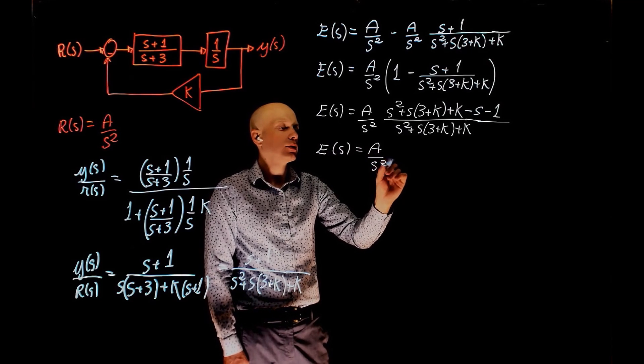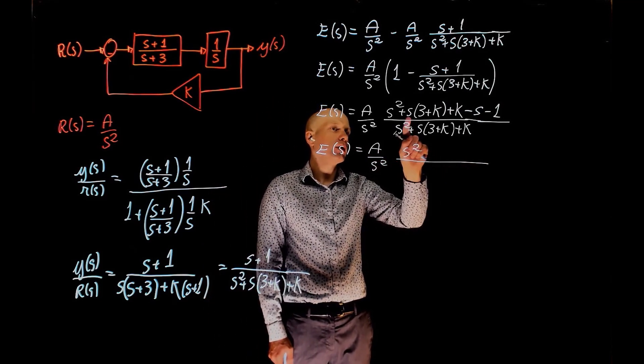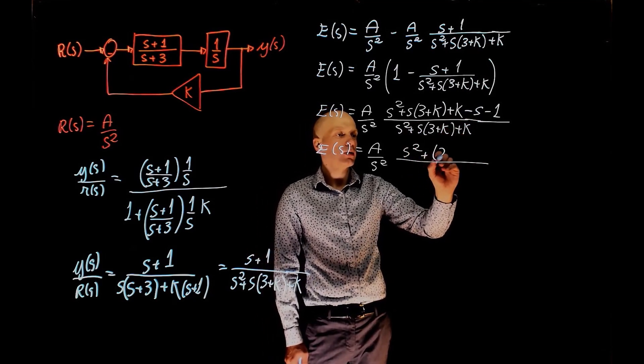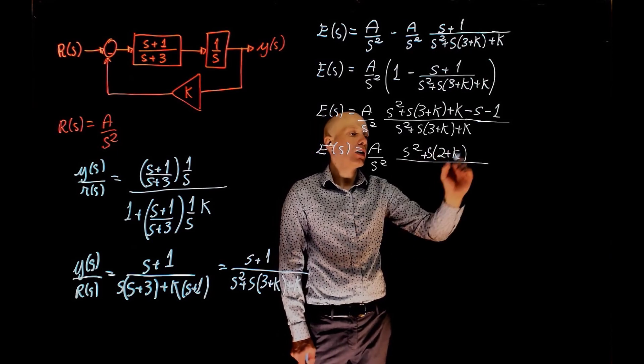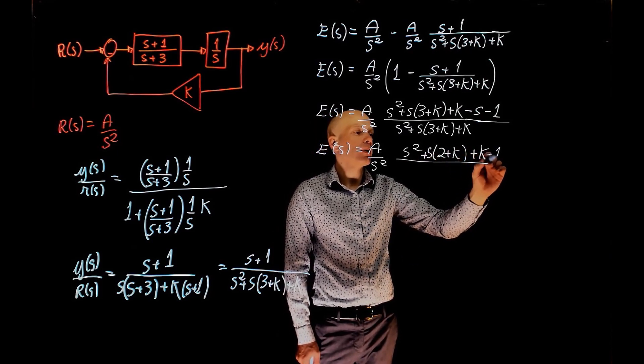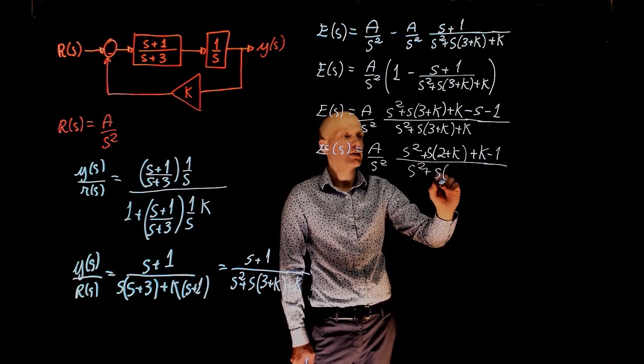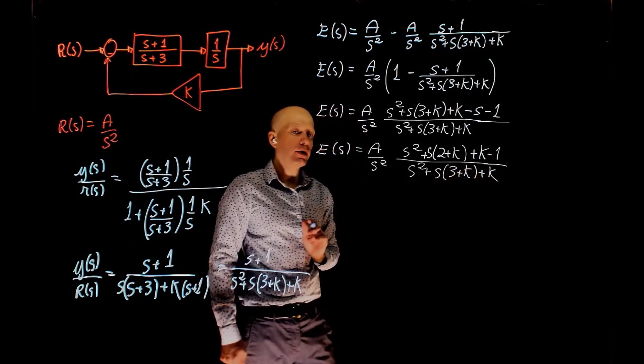This now simplifies to a over s squared times s squared. 3s minus s is 2s, so plus 2 plus k, all times s, and plus k minus 1, divided by s squared plus s times 3 plus k, plus k. So this is the expression for the error.